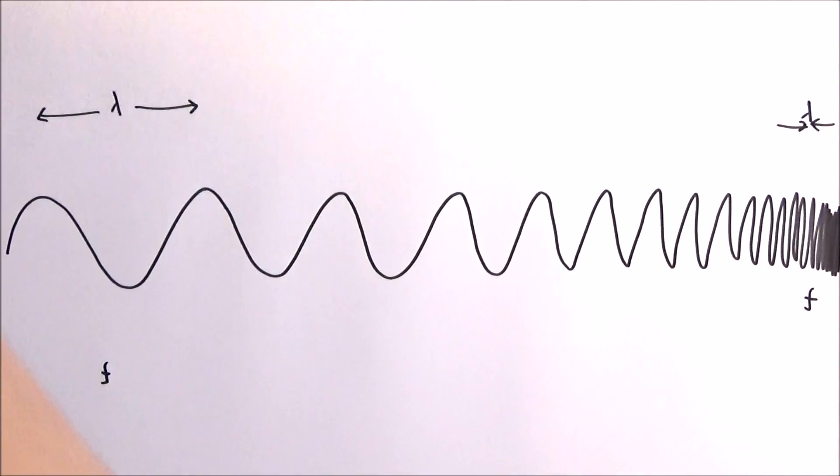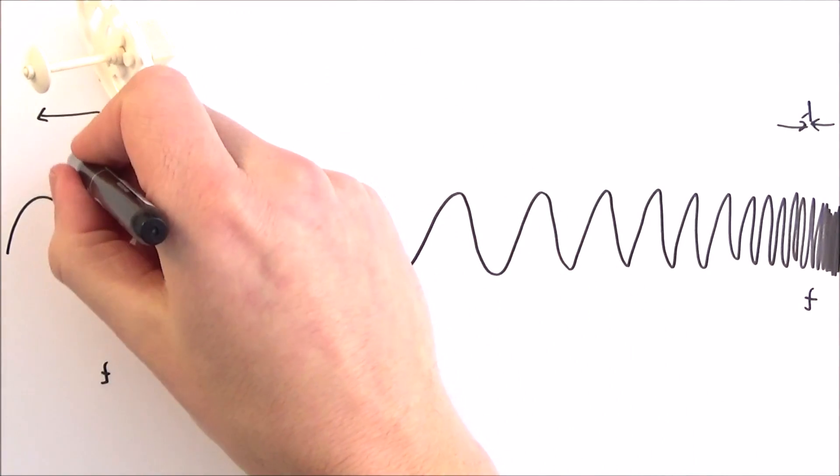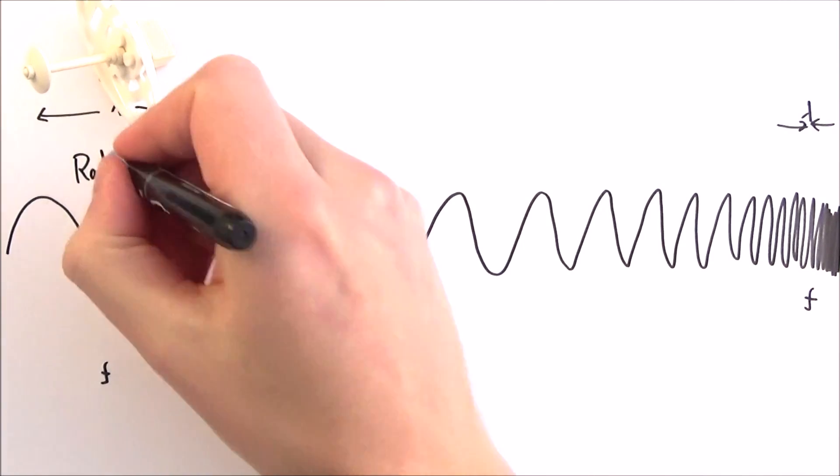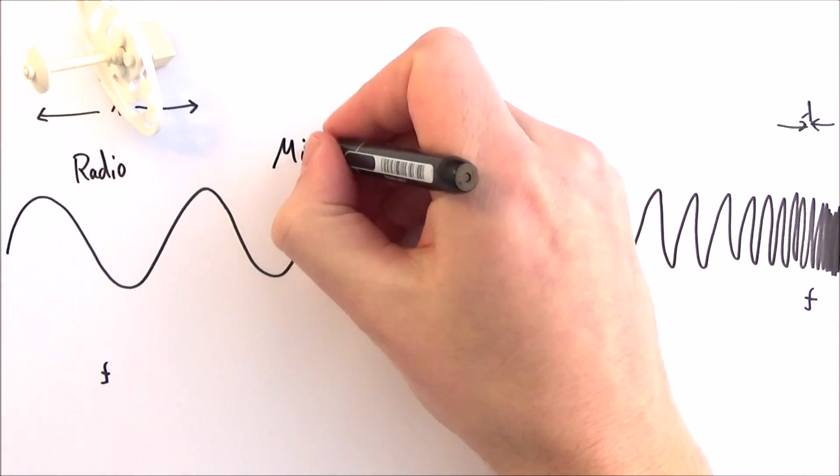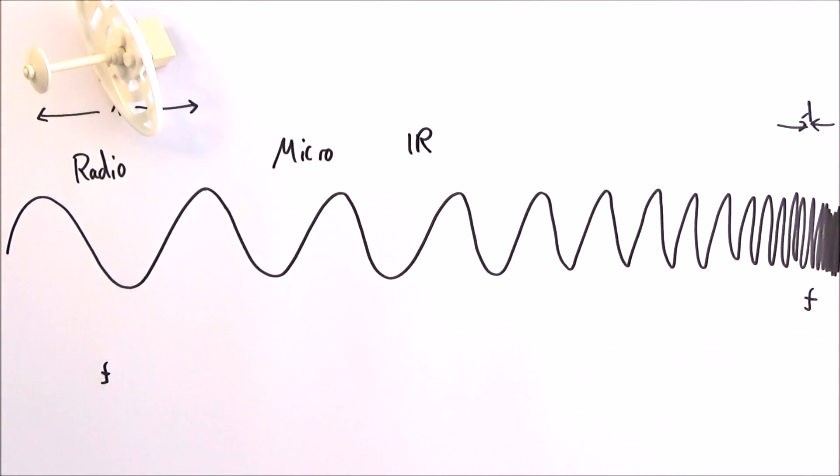And what you should be able to remember from GCSE is the order of the spectrum. And we start out at one end, we have the radio waves. Moving through micro, the infrared, which is often seen or felt as heat radiation. We then have visible.